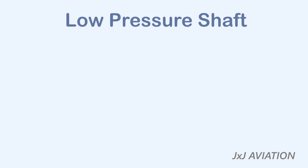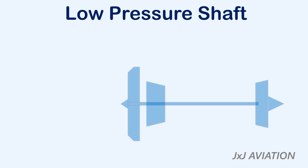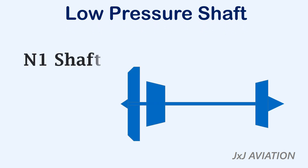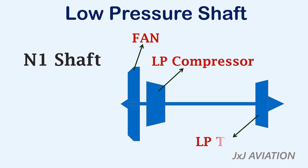The low pressure shaft, also called the N1 shaft, consists of a fan, a low pressure compressor, and a low pressure turbine installed on a single shaft. An axial flow type low pressure compressor is normally used in turbofan engines.